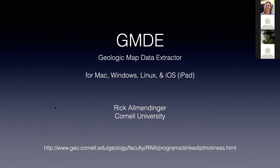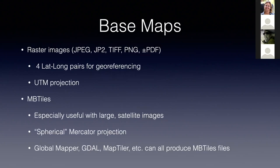As a mapping program, you need base maps, and there are two different types you can use with GMDE. You can use basic raster images such as you might download from the USGS or the Canadian Geological Survey — those base maps need to be geo-referenced with four latitude/longitude pairs, and the program does a least-squares best fit to a UTM projection for calculations in Cartesian coordinates. The program will let you know whether the fit is good enough or not.